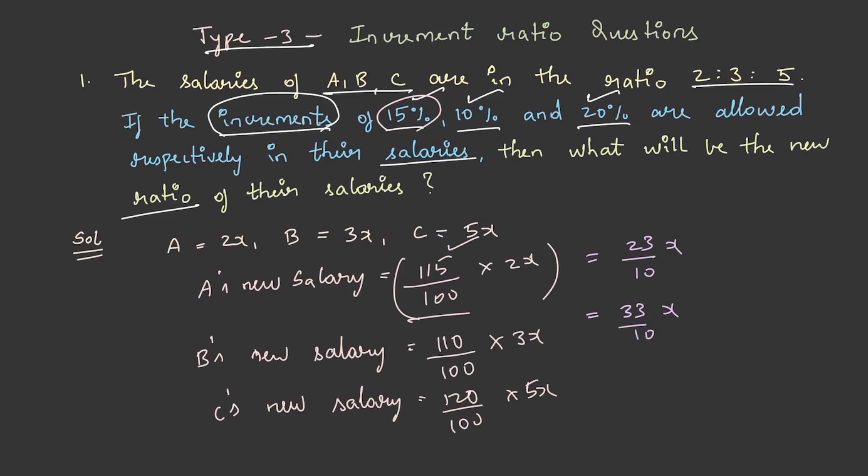Therefore, the new ratio of their salaries will be 23 by 10x is to 33 by 10x is to 6x and this becomes 23 is to 33 is to 60.